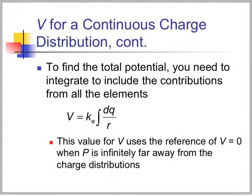To find the total potential, we integrate to include the contributions from all elements, where V is k times the integral of dq over r. This value of V uses the reference of V equals zero when P is infinitely far away from the charge distribution.